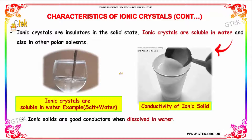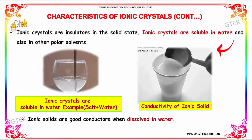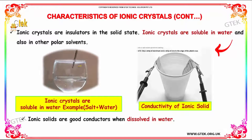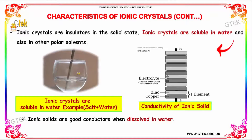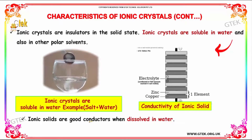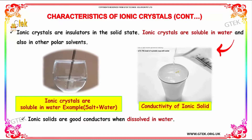Ionic crystals are insulators in the solid state, whereas ionic crystals are soluble in water and also in other polar solvents. They are good conductors when dissolved in water.